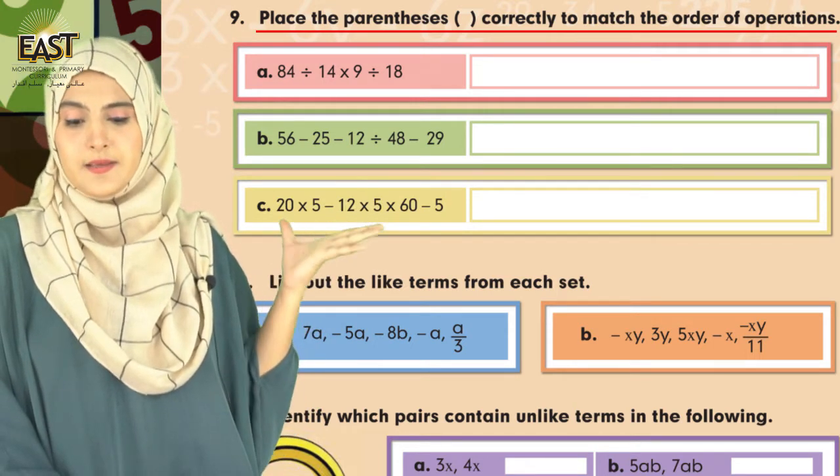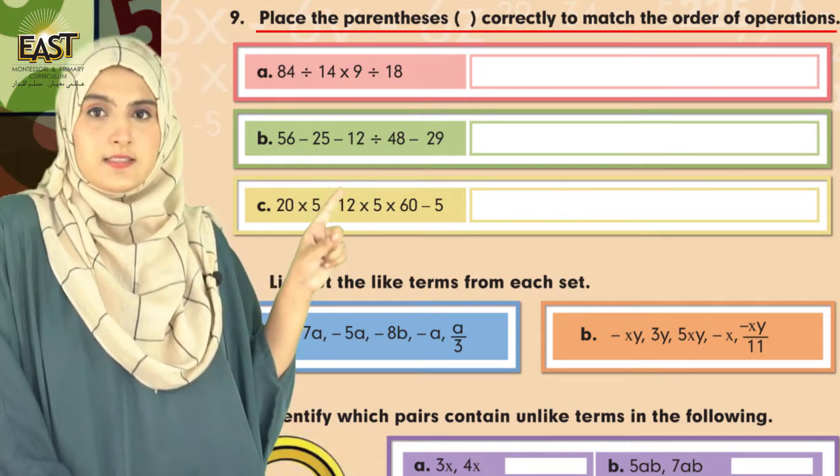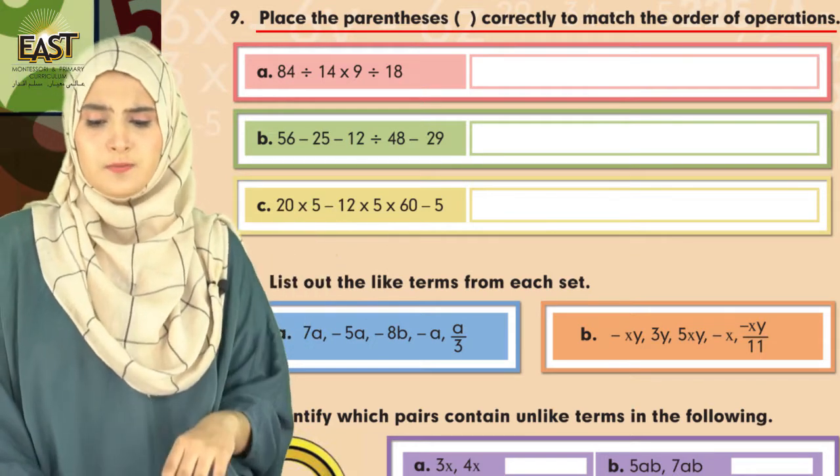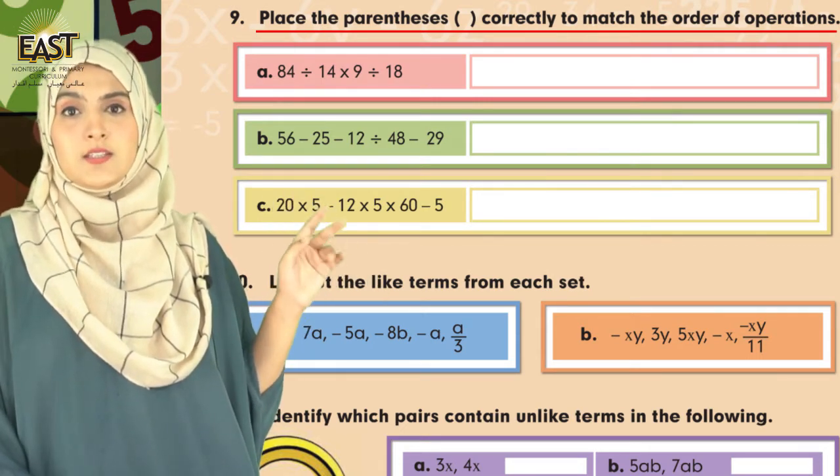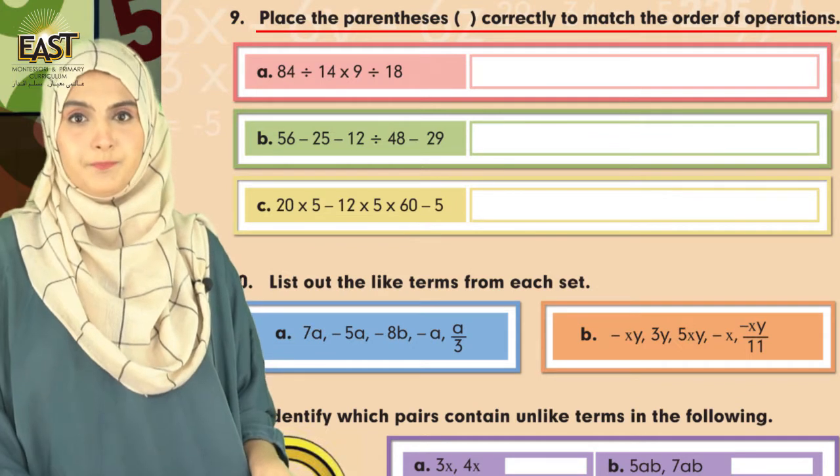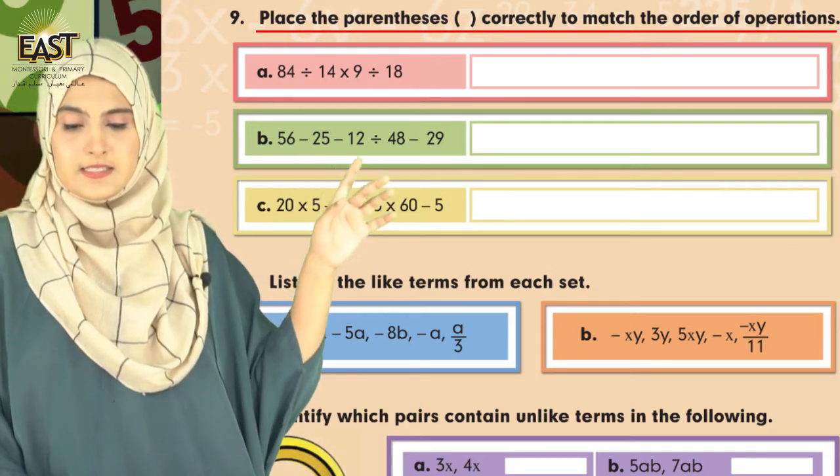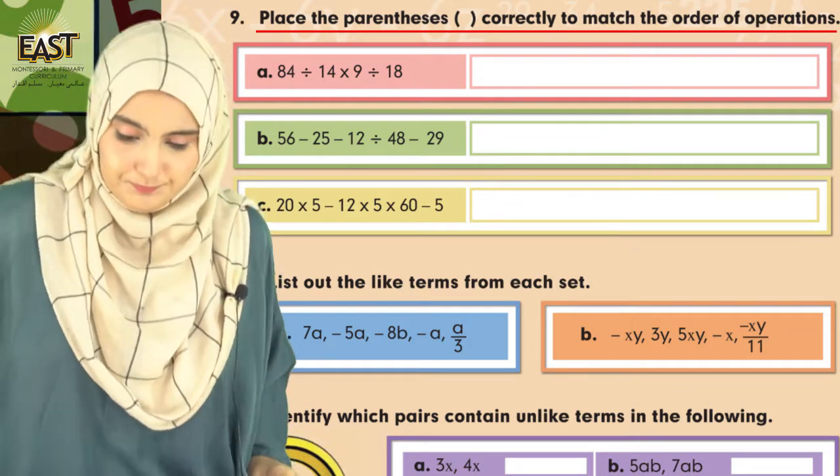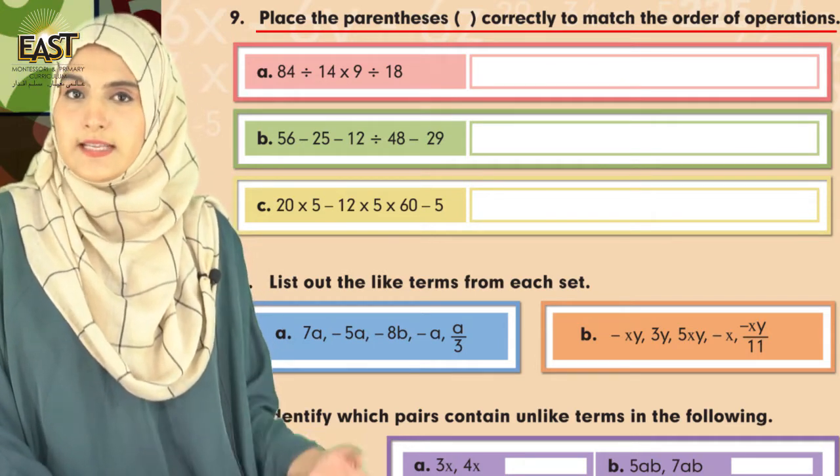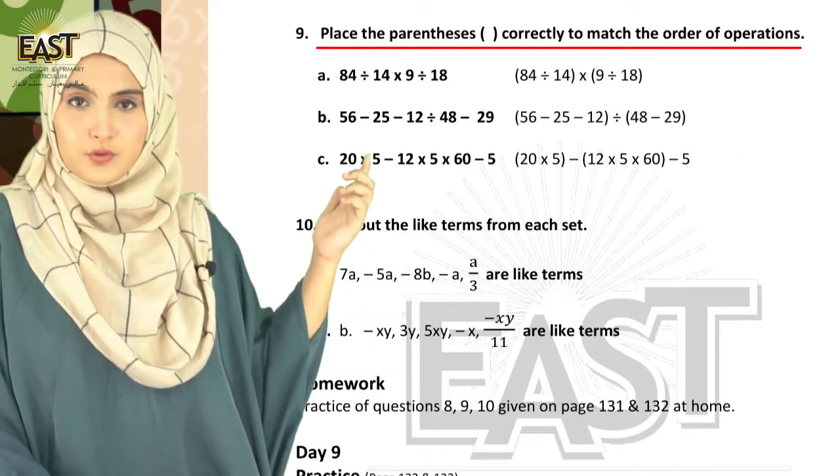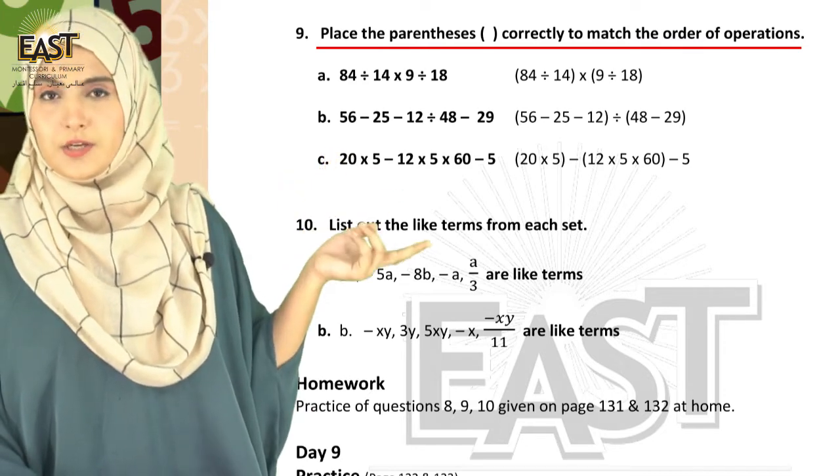When you get homework, you have to complete, practice, and submit. You have to place these brackets. In part A, you can see that 84 divided by 14 multiplied by 9 divided by 18. Here is where you need to put brackets.